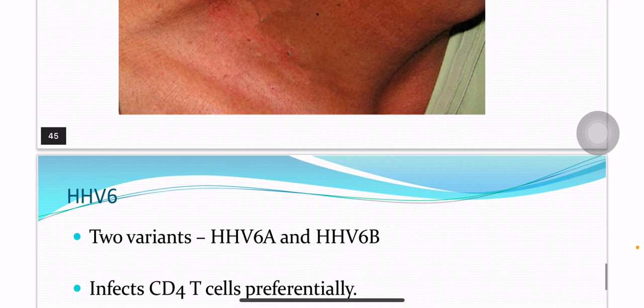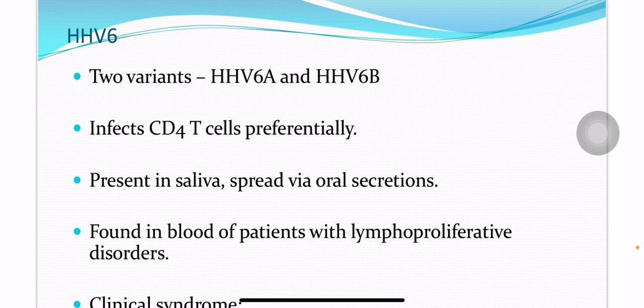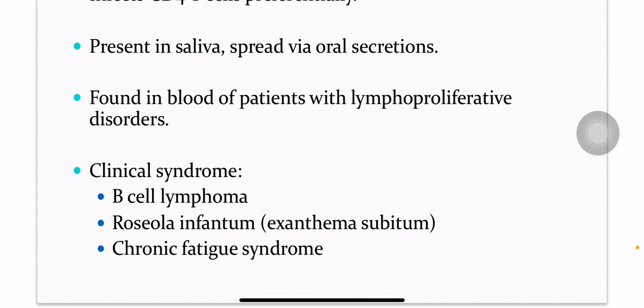Human herpes virus type 6 has two variants, HHV-6A and HHV-6B. It infects CD4 T cells preferentially. HHV-6 is present in the saliva and spreads via oral secretions, found in blood of patients with lymphoproliferative disorders. Clinical syndromes include B-cell lymphoma, Roseola infantum, and chronic fatigue syndrome.